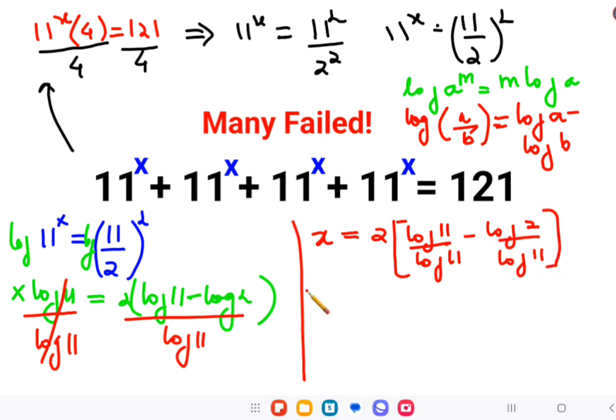This comes out to be x = 2(1 - log(2)/log(11)). If they have provided you with log books you can directly put the values: log(2) = 0.301 and log(11) = 1.044. When you do the calculation you get the value of x as 1.422.